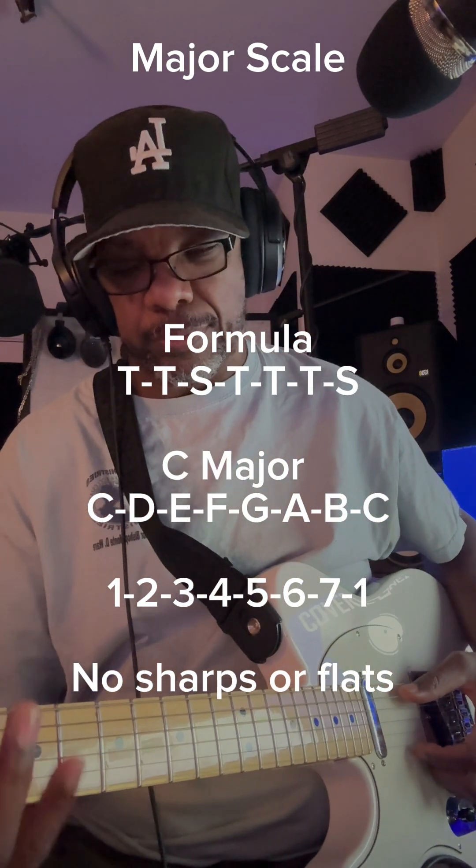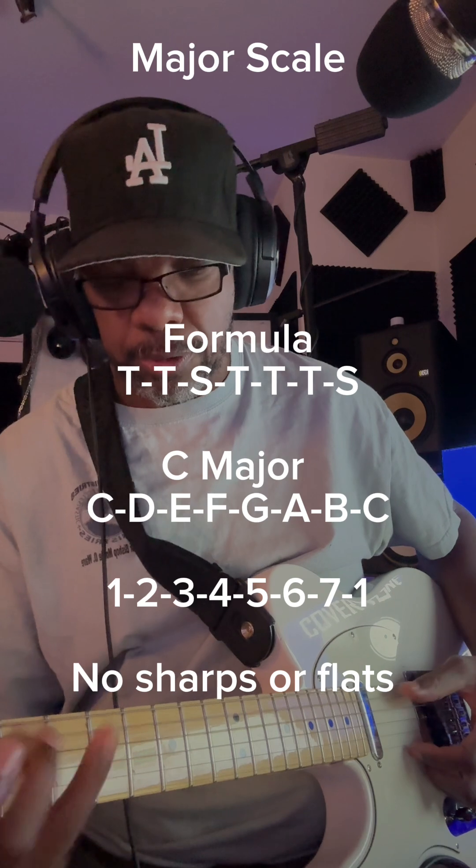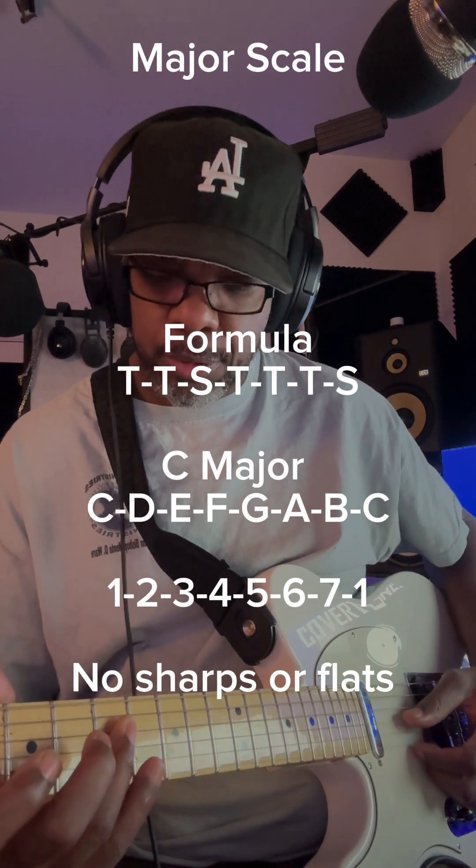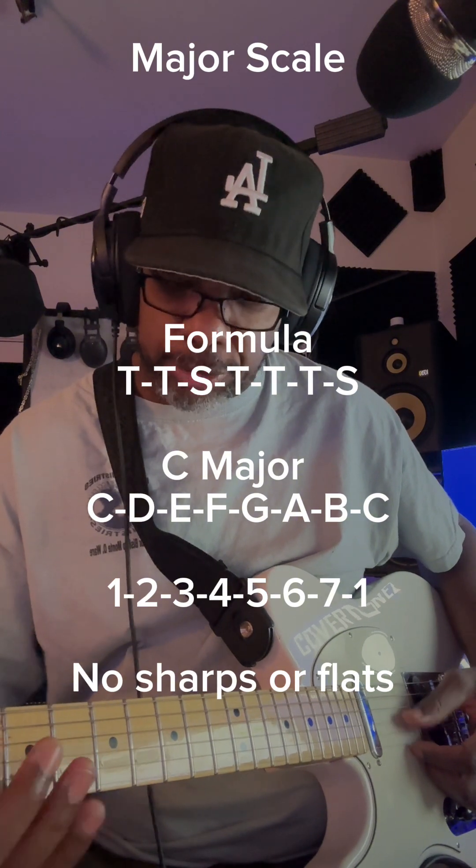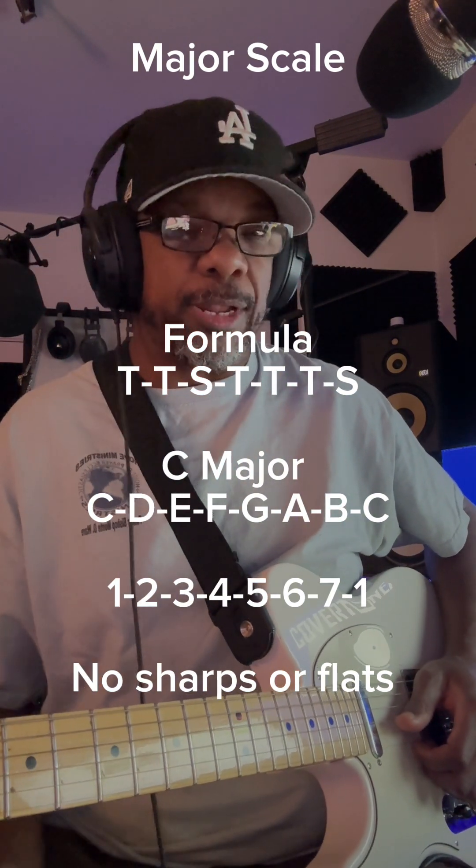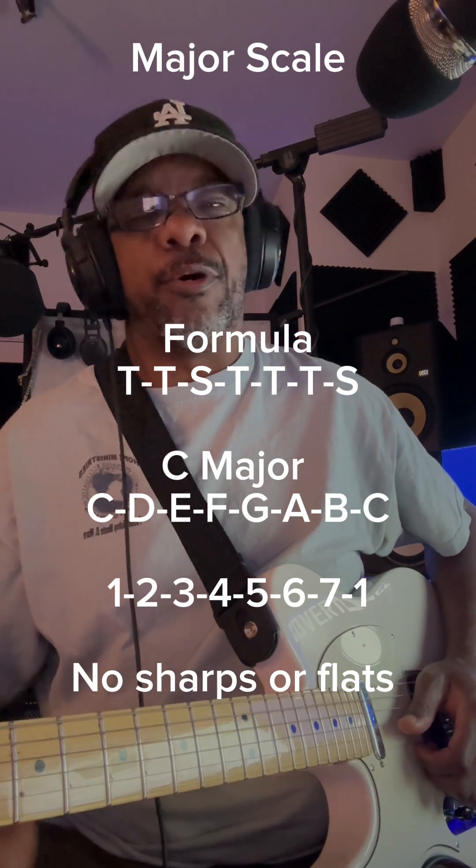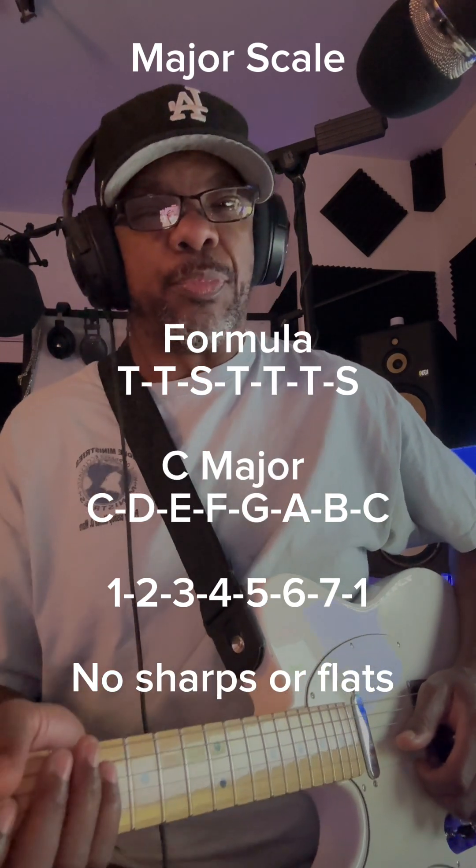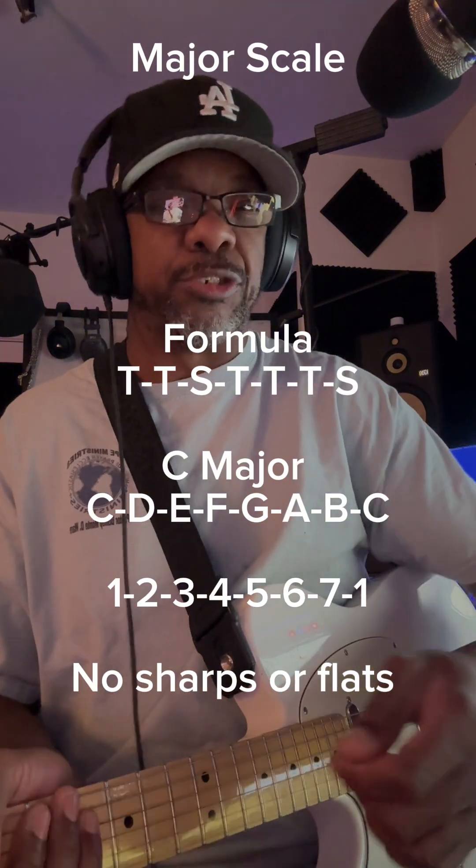So, that comes out to tone, tone, semitone, tone, tone, tone, and then semitone. So it's a formula. The C major scale is easy to figure it out. It's easy to visualize it. So, that's how you get a major scale.